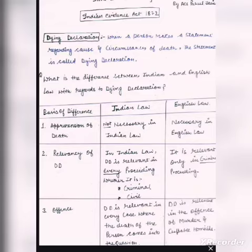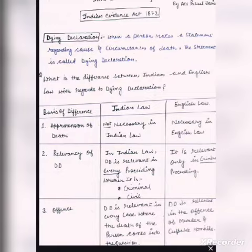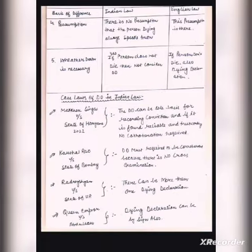The second difference is relevancy. In Indian law, dying declaration is relevant in every proceeding, whether criminal or civil. But in English law, it is only relevant in criminal proceedings. The third basis of difference is the offense. In Indian law, dying declaration is relevant in every case where the cause of death comes into question, but in English law it is relevant only in cases of murder and culpable homicide.